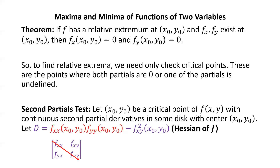To compute this determinant, we go along the diagonal from left to right and multiply fxx times fyy, then subtract the product along the backwards diagonal, fxy times fyx. Since f has continuous second partial derivatives, by Clairaut's theorem fxy and fyx are the same, so that product can be written as fxy squared.